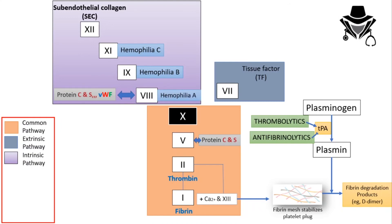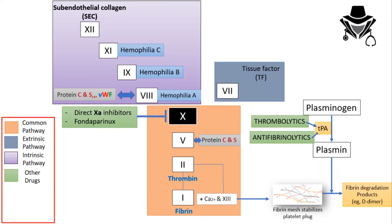Now let's look at anticoagulant drugs. We have direct factor 10 inhibitors like apixaban, and fondaparinux which also inhibits factor 10. Another group targets factor 2 — thrombin — called direct thrombin inhibitors, with dabigatran as an example.